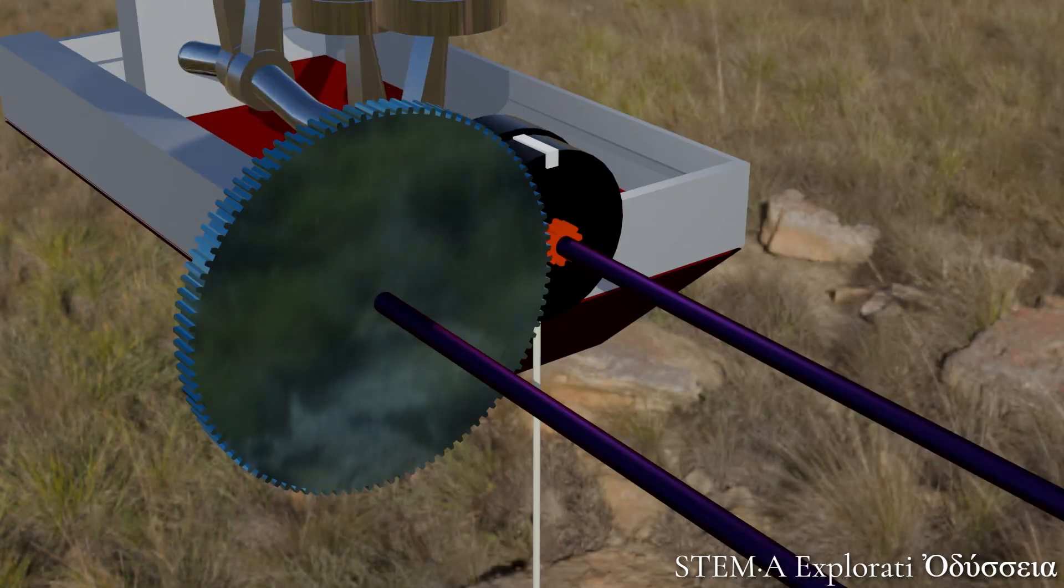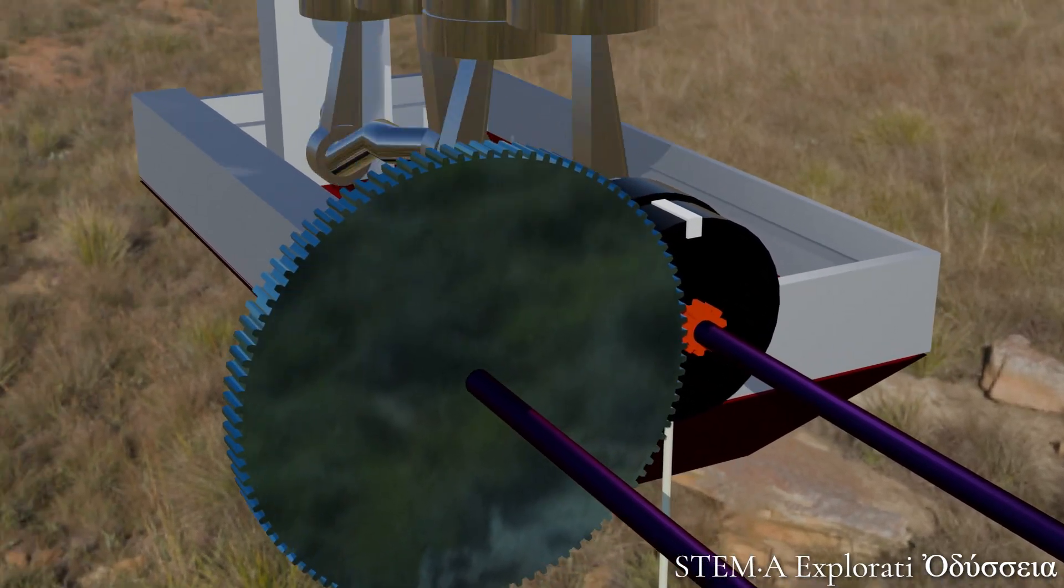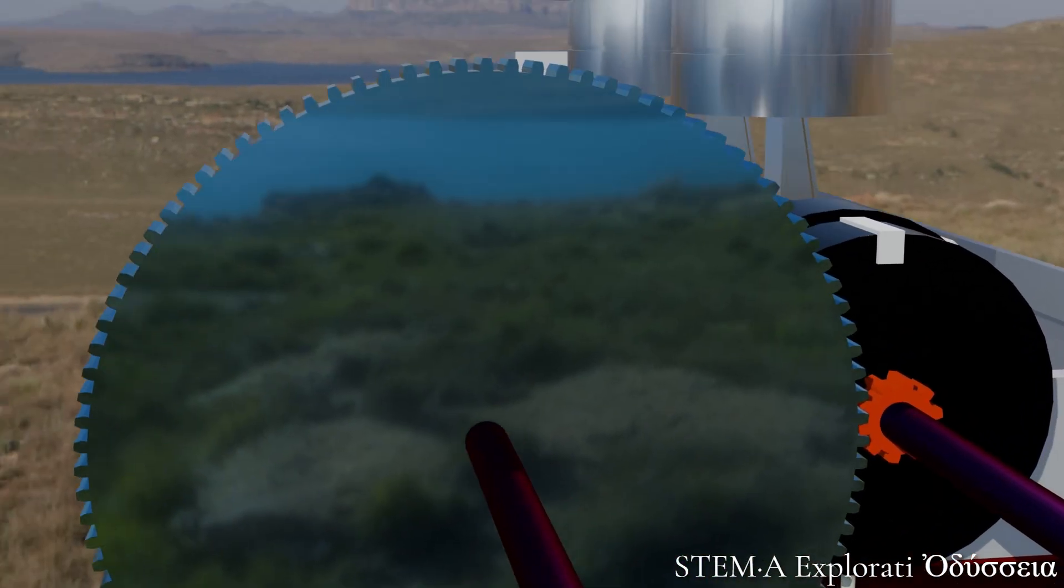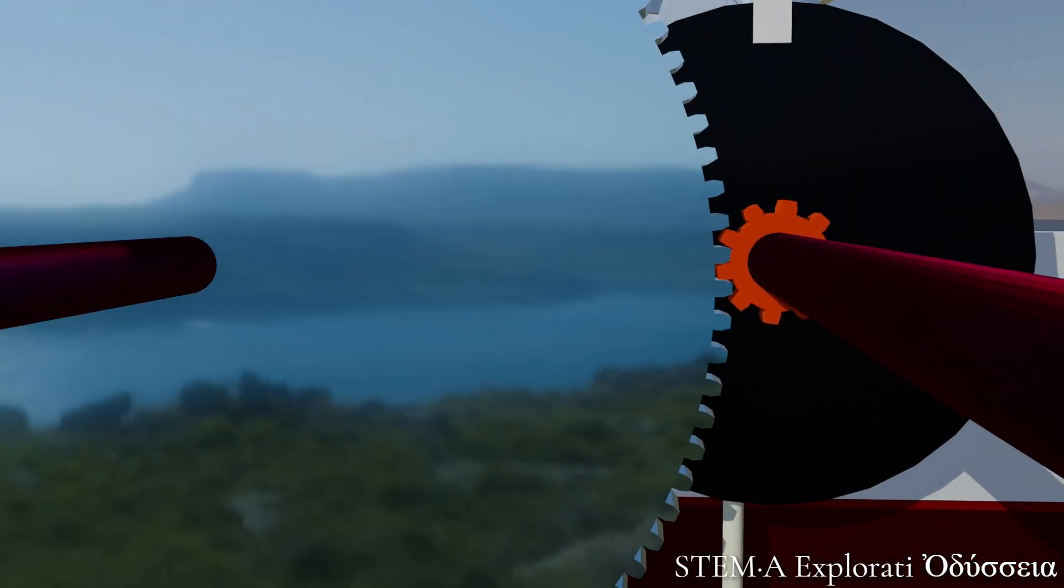So how do engineers solve this? Time to bring in the hero of our story. Gears. Observe how a small red gear on the axle meshes with a much larger blue gear.